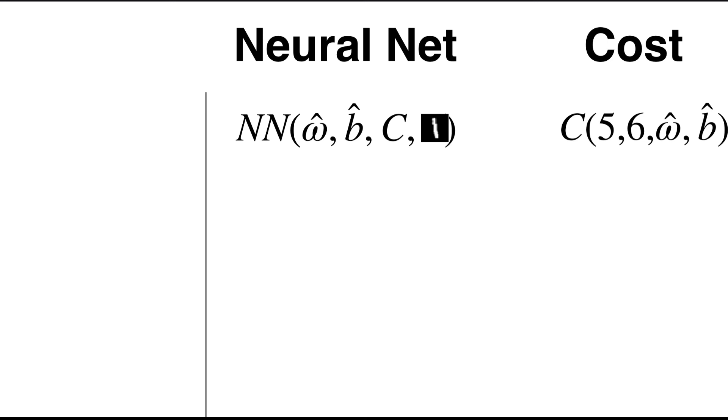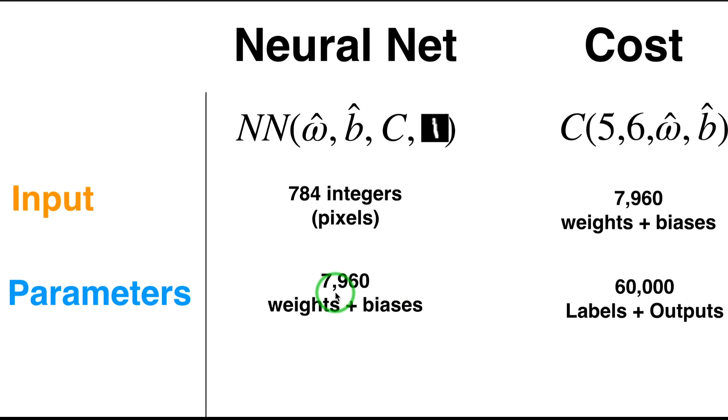We're now able to see the two functions put one beside the other: on one side, the neural net; on the other side, the cost function. And compare the inputs. For instance, in one case it's the 784 integer values corresponding to the pixels of the input image. In the second case, the 8,000 numbers—actually floats—corresponding to weights and biases. When it comes to parameters for the neural net, the weights and biases are kept fixed, frozen as parameters, while the labels and the outputs, approximately 60,000, are the parameters of the cost function that are entering here. Finally, when it comes to the output of the neural net, as we saw before, it's a vector of 10 numbers that essentially gives us the probability of one specific digit, and then there is for the cost function just one value.